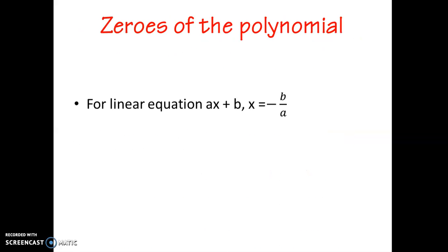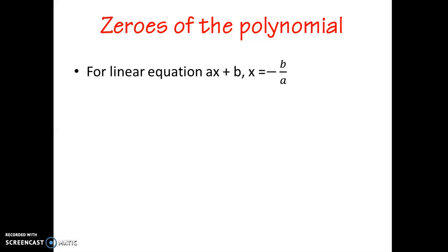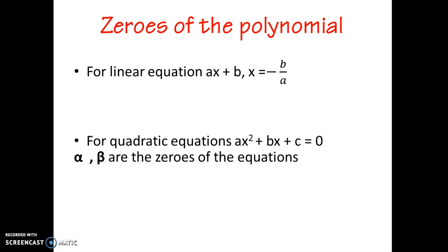Next, we see the zeros of the polynomial. If we have a linear equation ax plus b, then x is the zero of the polynomial.